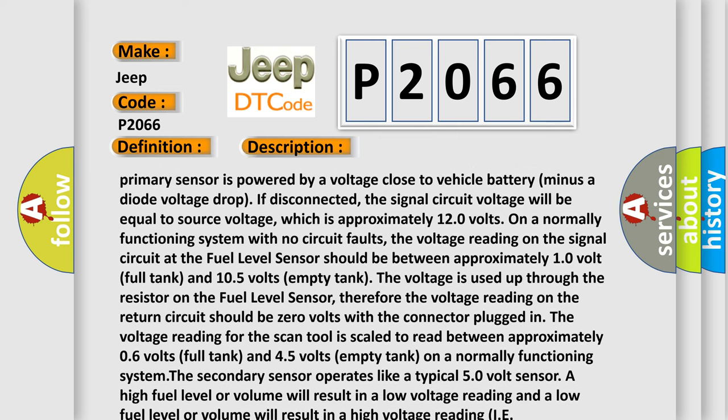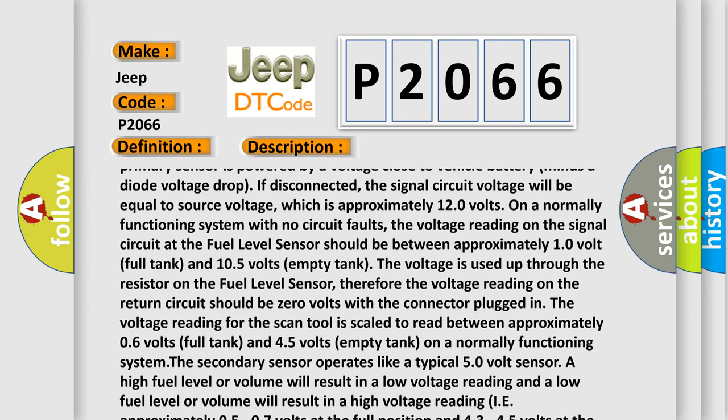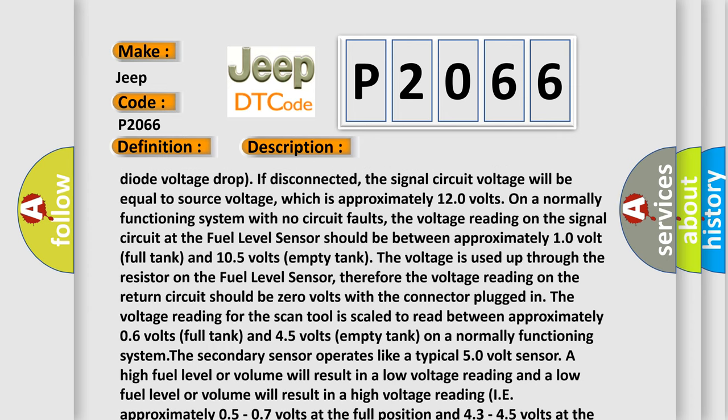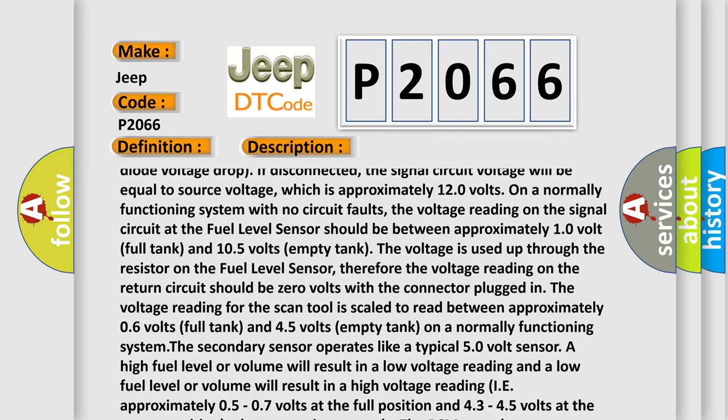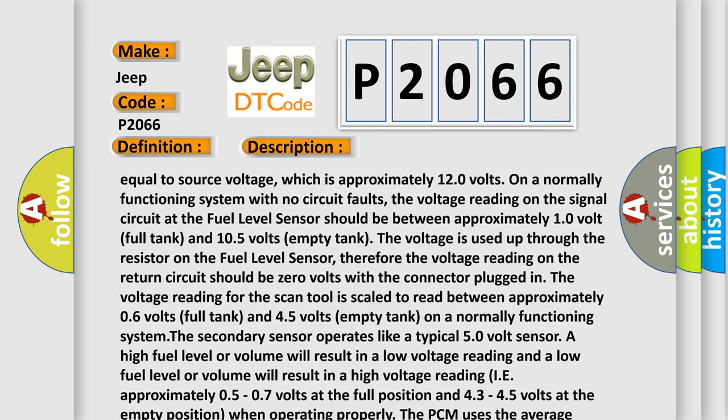The voltage reading on the return circuit should be zero volts with the connector plugged in. The voltage reading for the scan tool is scaled to read between approximately 0.6 volts full tank and 4.5 volts empty tank on a normally functioning system.